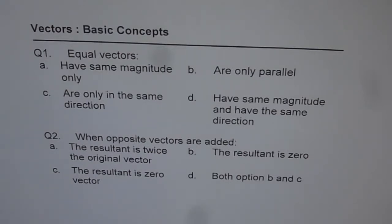Question number 2: When opposite vectors are added, then what happens? 4 choices are given to us.